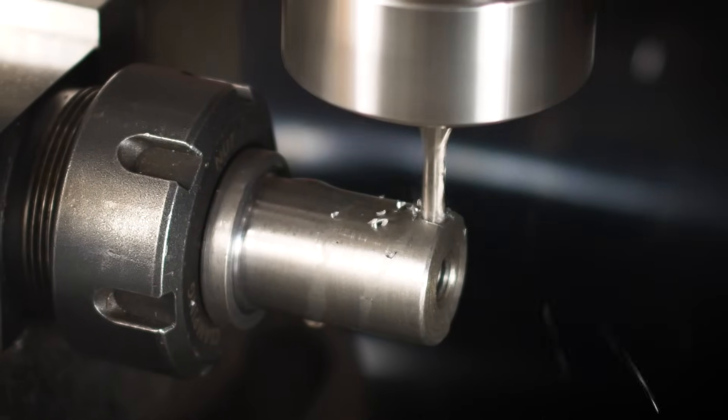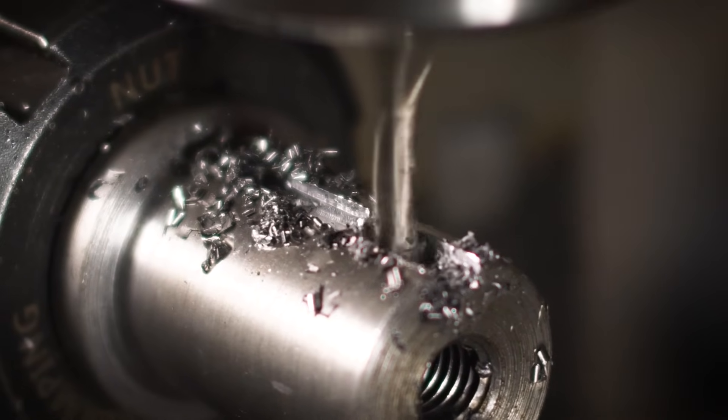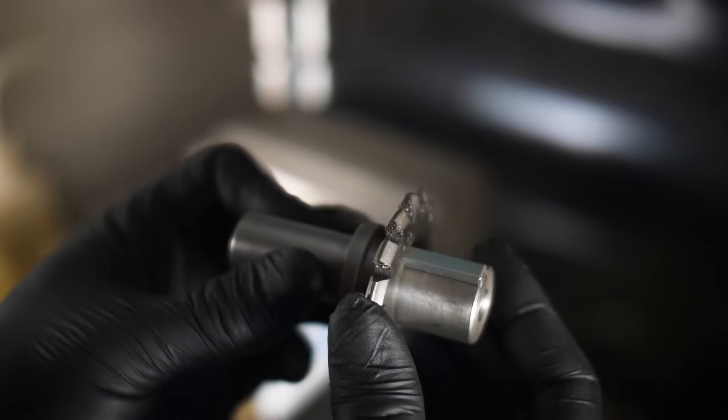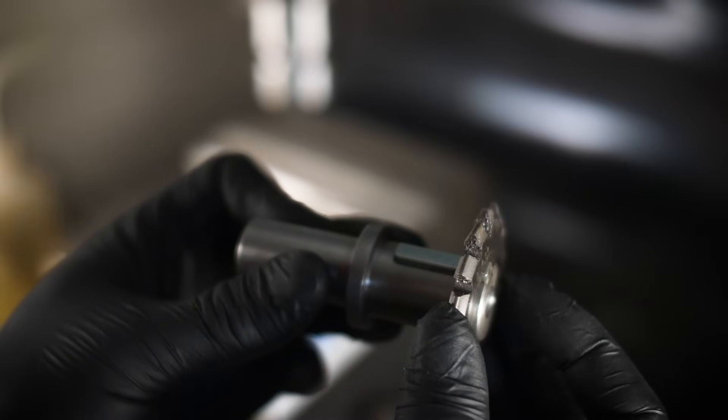Over at the mill, I cut a keyway. And then I Loctited the key in place. I want this gear cutter at the end, so I need to make a spacer.